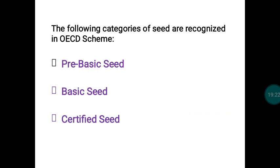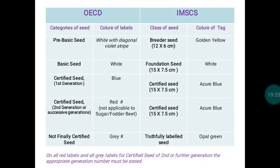Coming to the seed category system, OECD has different categories: pre-basic seeds, basic seeds, and certified seeds. These are similar to the Indian Minimum Seed Certification Standard categories of breeder seed, foundation seed, and certified seed. In the OECD scheme, pre-basic seed is equivalent to our breeder seed, basic seed is equivalent to our foundation seed, and certified seed is equivalent to our certified seed.